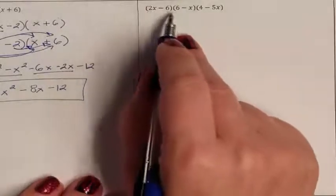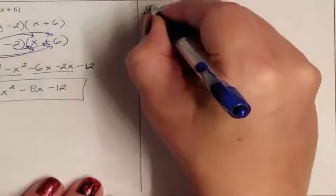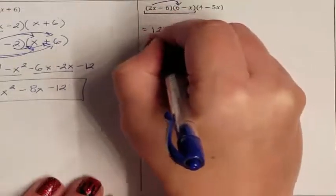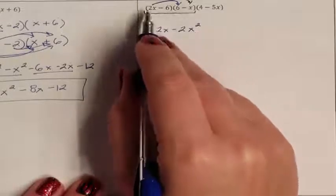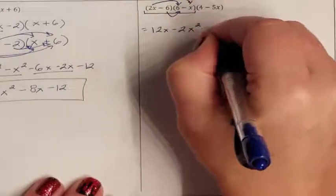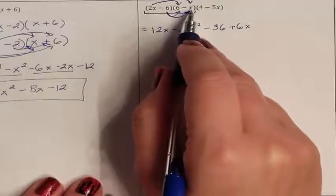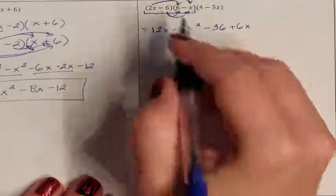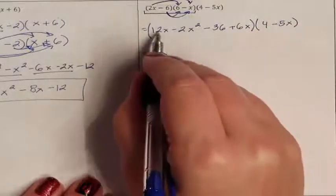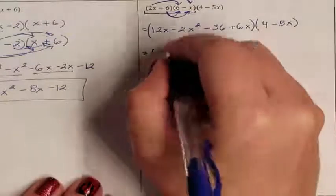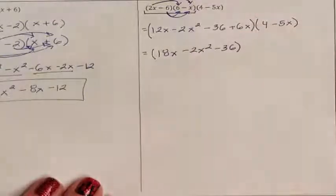Our last practice problem. Because I have three parentheses in a row, I need to do groups of two at a time. 2x times 6 is positive 12x. 2x times negative x is negative 2x squared. The 2x is done. Negative 6 times 6 is negative 36. Negative 6 times negative x is positive 6x. Done multiplying the first by the second. Combining like terms: 12x plus 6x is 18x, negative 2x squared, and negative 36.